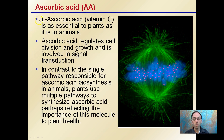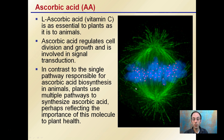L-ascorbic acid refers to the shape it has — we look at L and D forms, and L is the more biologically active form. This is the form of vitamin C. It's essential for plants as it is to animals, crossing both kingdoms. Vitamin C regulates cell division and growth, and it's involved in signal transduction — the passing of signals within a plant or within a cell.